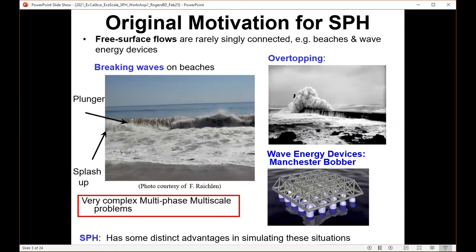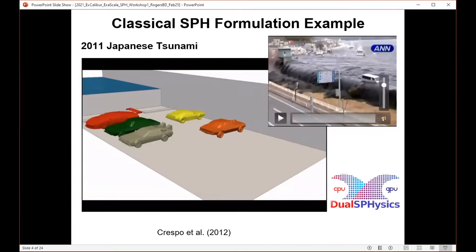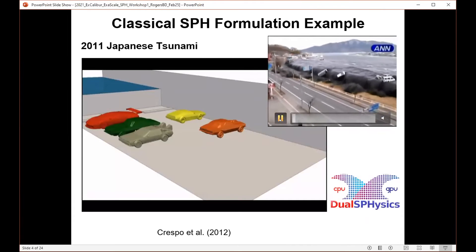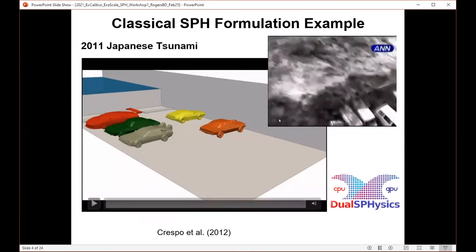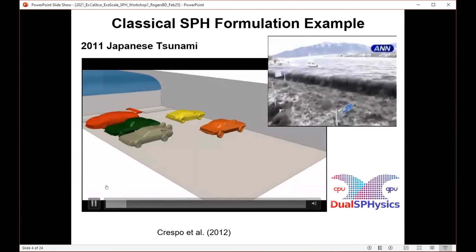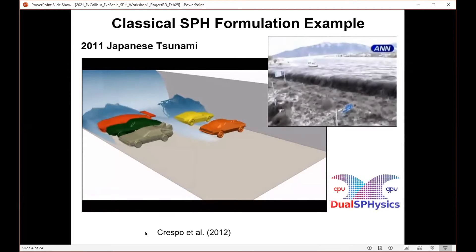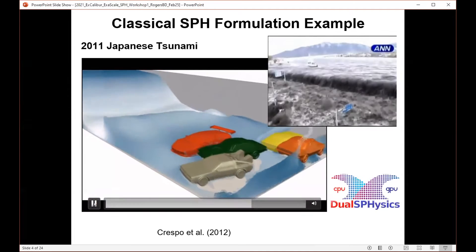My original motivation for SPH — on the left you can see a broken wave at a beach, a plunging wave with splash-up and lots of bubbles. On the right is a lighthouse being impacted by a wave, and a wave energy device. SPH has distinct advantages simulating these applications. Here is the classical example: a tsunami overtopping a defense in Japan in 2011, where vehicles get tossed around like toys. We can do this in SPH relatively straightforwardly — colleagues at the University of Vigo in Spain demonstrated this fluid-structure interaction.